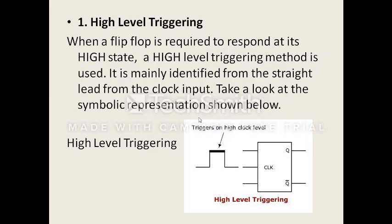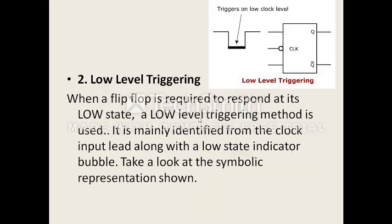This is clearly shown in the image. Next, we look at high level triggering. When the clock goes up to the high level, that is positive — that is high level triggering. We represent the clock in the block diagram with an arrow. When it comes to low level triggering, when our clock pulse is at the negative level, we highlight the clock on the low clock level. We represent the clock in the block diagram with a bubble, meaning low level — that is an inverted value.